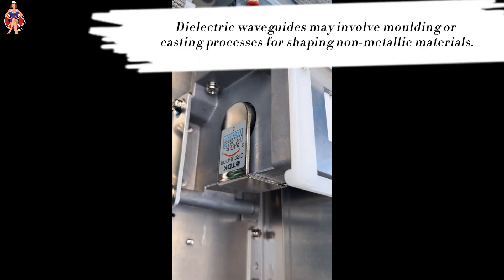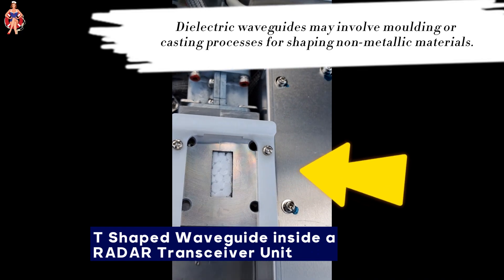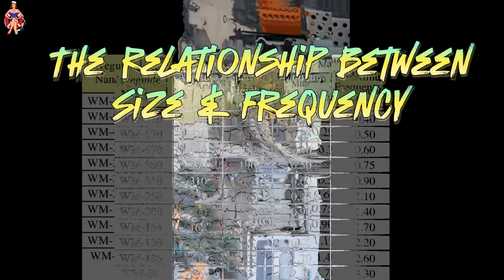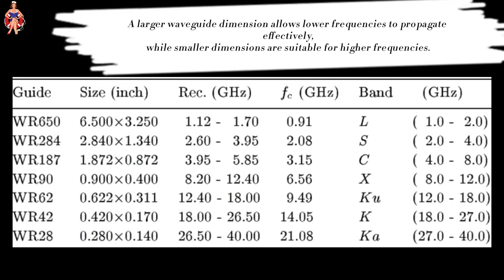The relationship between size and frequency: The dimensions of a waveguide, such as its width and height for rectangular waveguides or diameter for circular waveguides, directly impact the frequencies that can be transmitted. A larger waveguide dimension allows lower frequencies to propagate effectively, while smaller dimensions are suitable for higher frequencies.